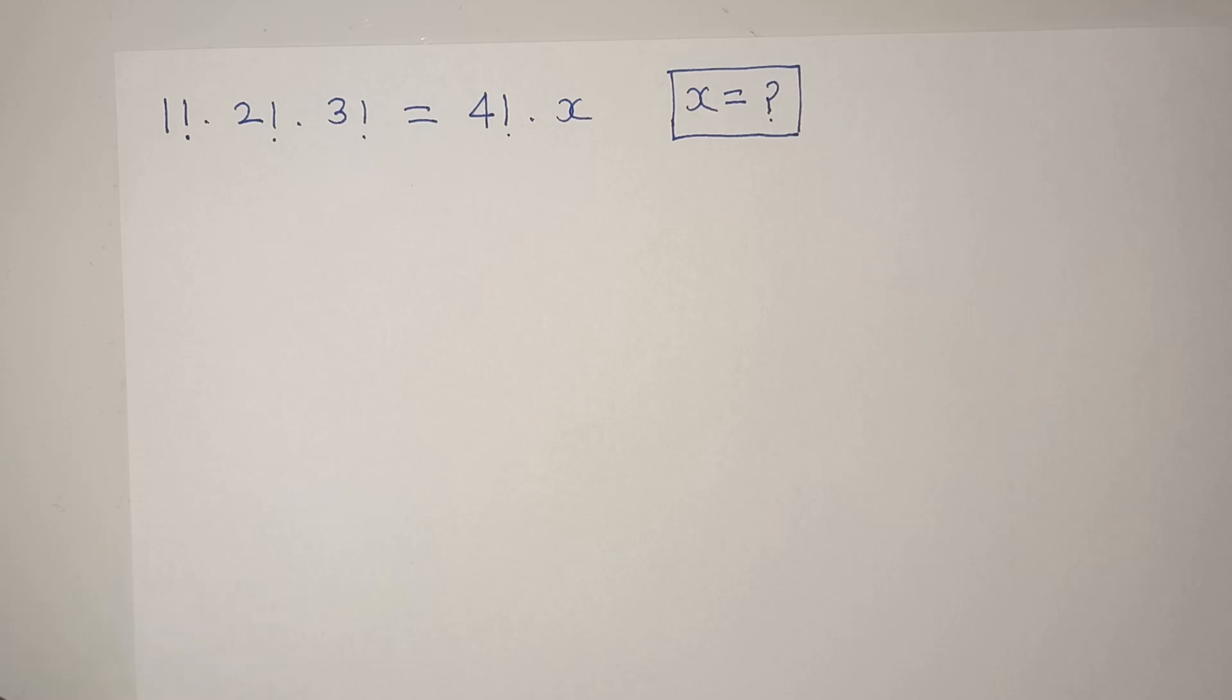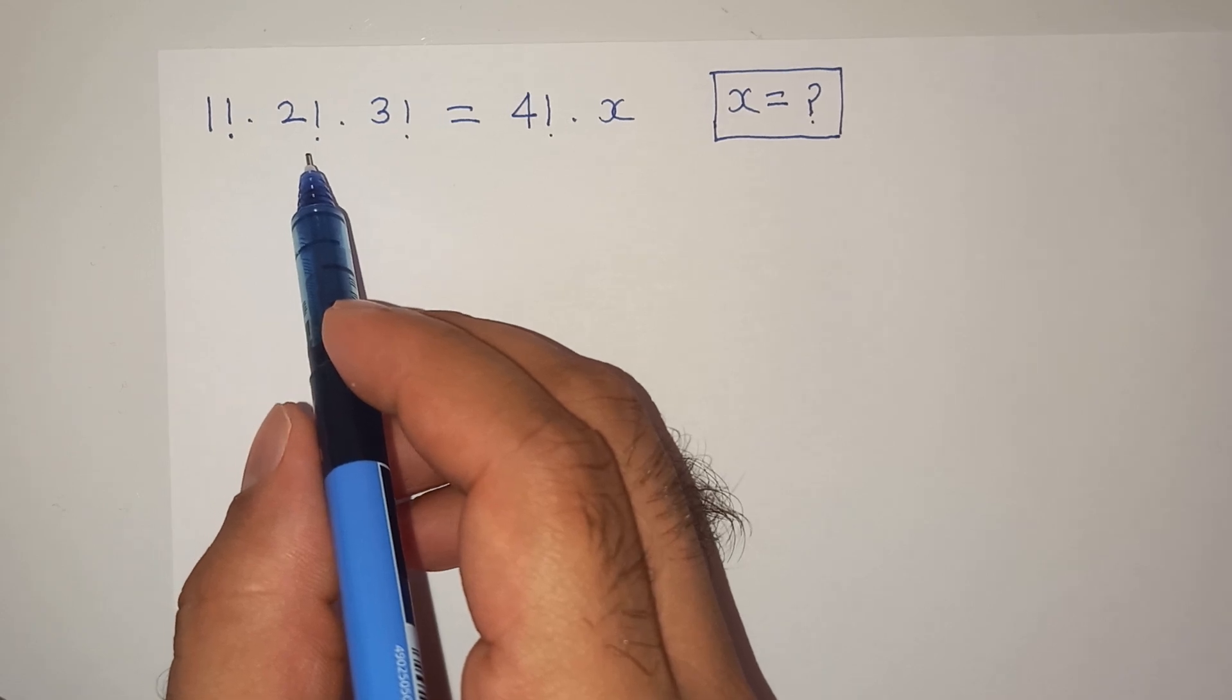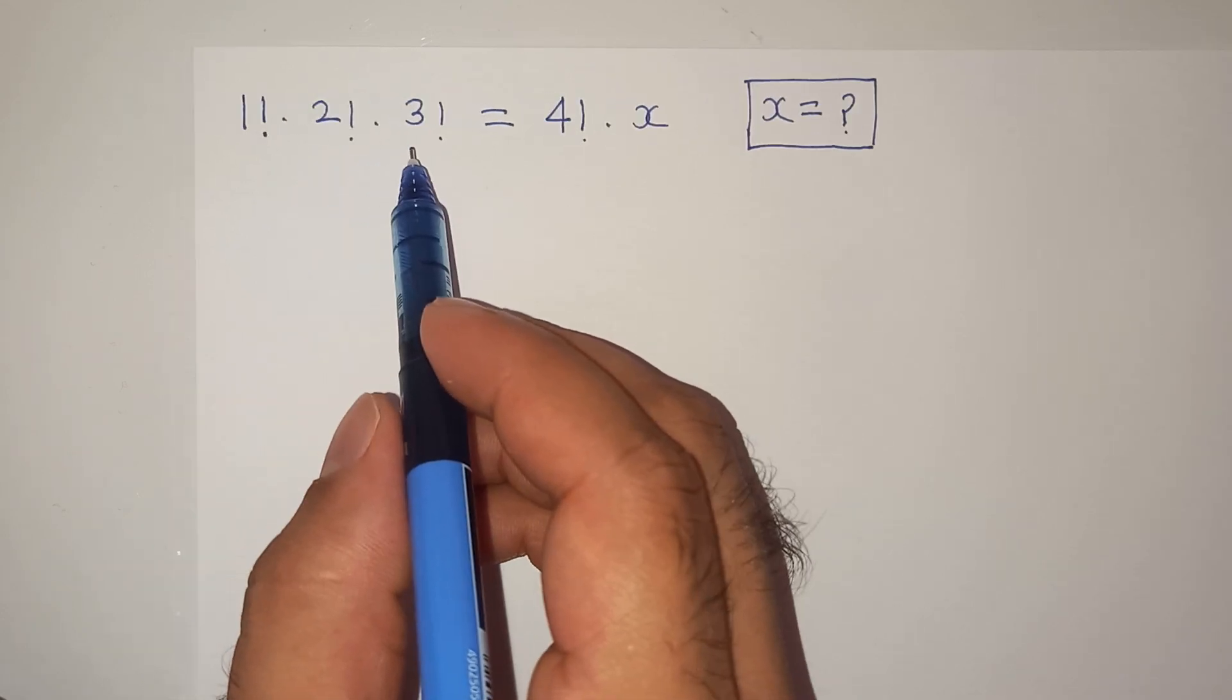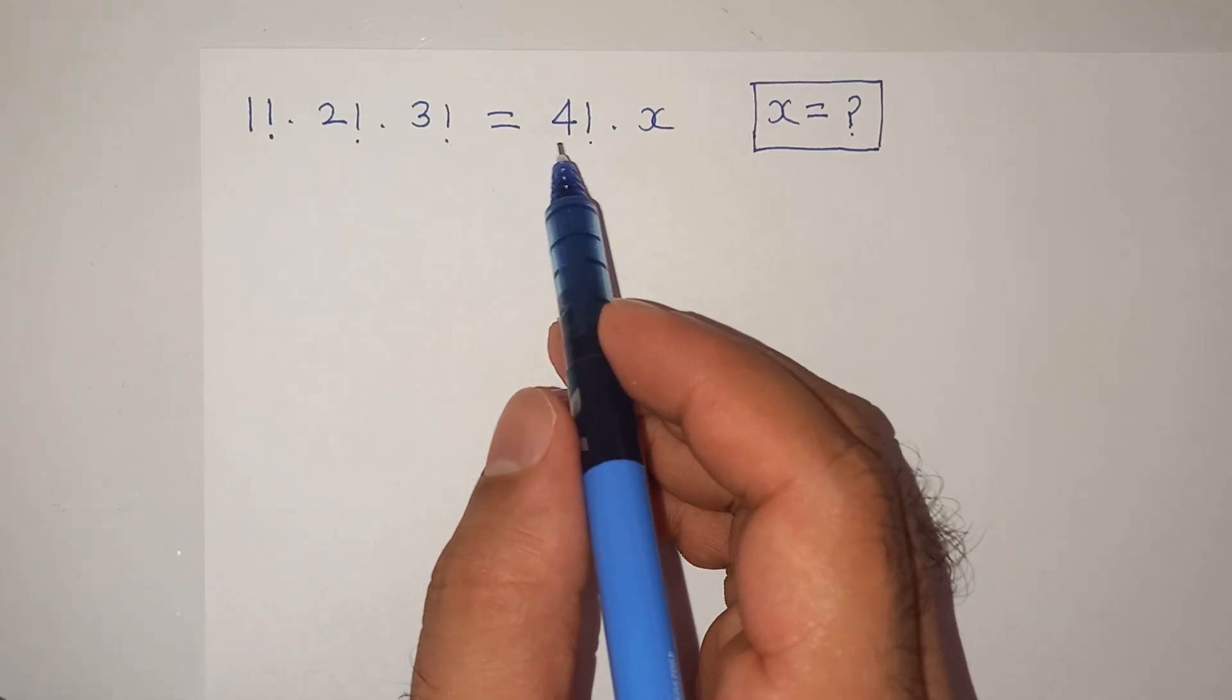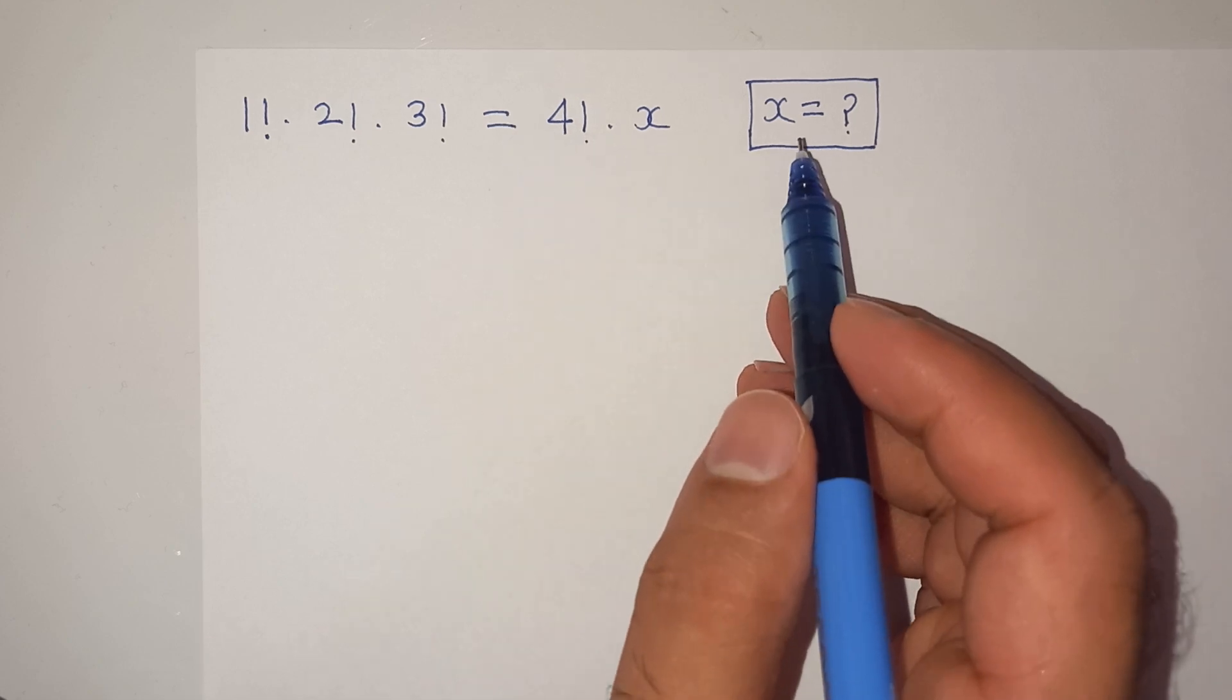Hi guys, welcome back to your channel. We are going to solve this question today which is 1 factorial multiplied 2 factorial multiplied 3 factorial equals to 4 factorial multiplied x. So what is the value of x?